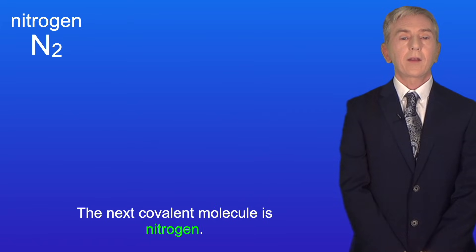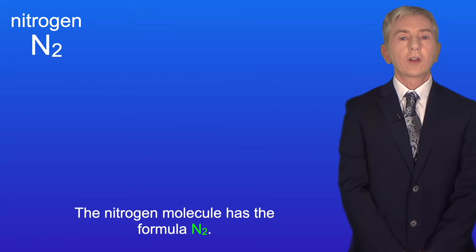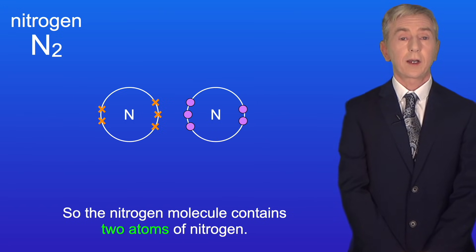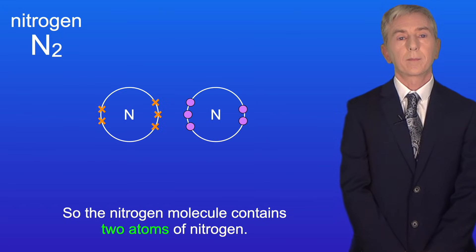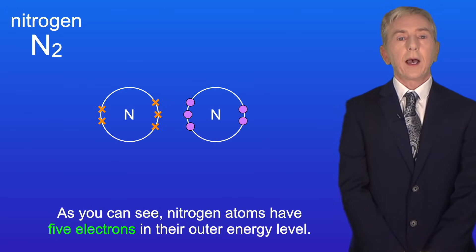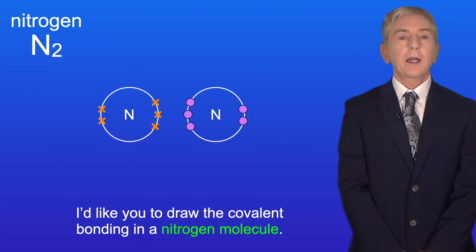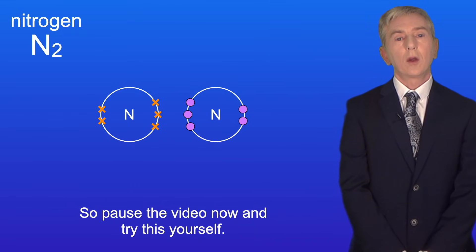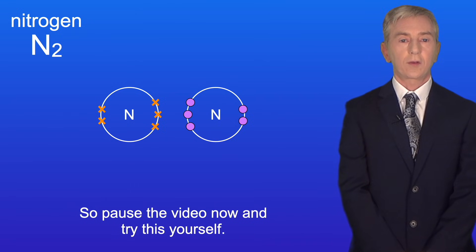The next covalent molecule is nitrogen. The nitrogen molecule has the formula N2, so it contains two atoms of nitrogen. As you can see, nitrogen atoms have five electrons in their outer energy level. I'd like you to draw the covalent bonding in a nitrogen molecule, so pause the video now and try this yourself.